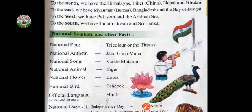The national anthem of India, Jana Gana Mana, was composed by the great poet Rabindranath Tagore and was adopted by the Constituent Assembly of India on January 24, 1950.